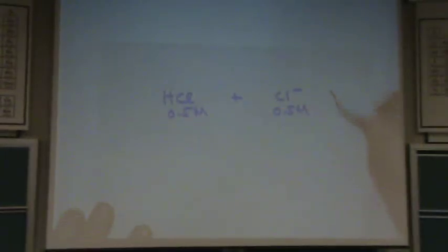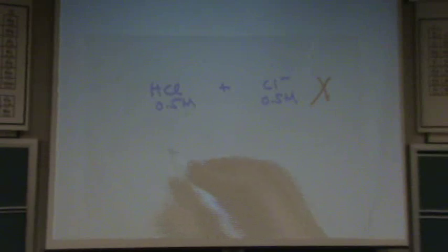How about HCl, 0.5 molar, plus Cl minus 0.5 molar. Is that a buffer? I have the acid and its conjugate. Yeah, it's not weak. This is not a buffer because the original acid was not a weak acid. Okay, let's try another one.